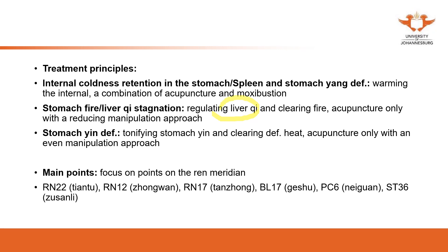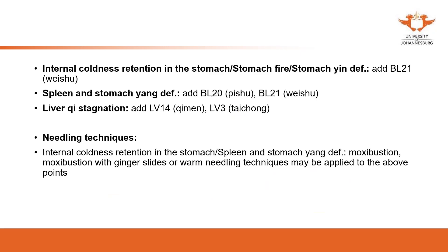To regulate the qi, we use Ren 22, then Ren 12 as local points. Ren 17 is the meeting point — the qi meeting point. We use Ren 17, Pericardium 6, and Stomach 36 to regulate the qi. As we study more, the selection of points is quite similar across conditions. For liver qi stagnation, we use Liver 14 and Liver 3.